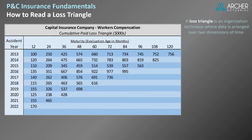A loss triangle is an organization technique where data is arranged over two dimensions of time. There are two primary advantages to the triangle format: development and comparability.